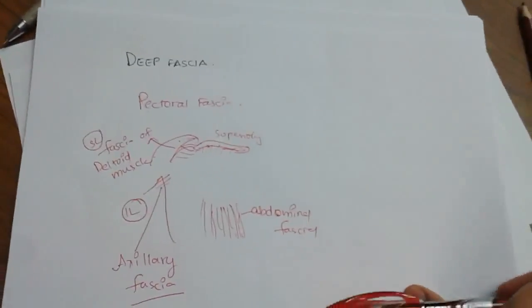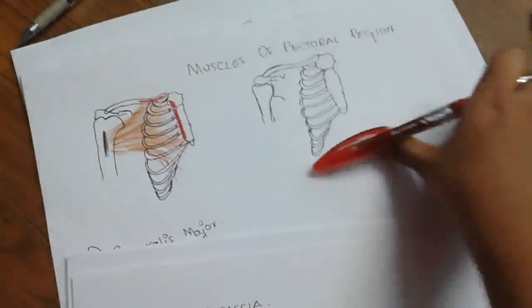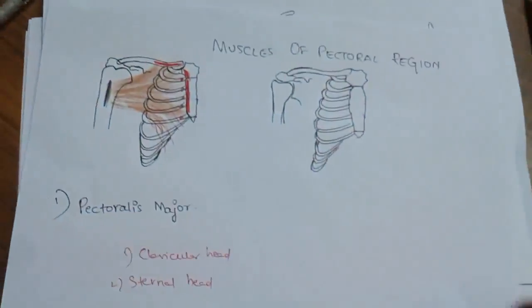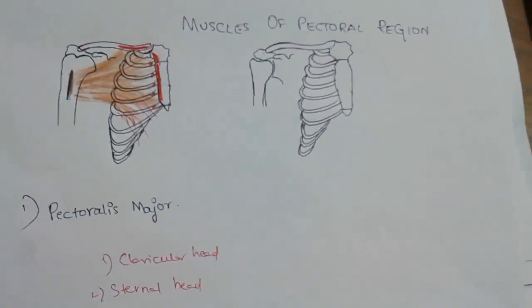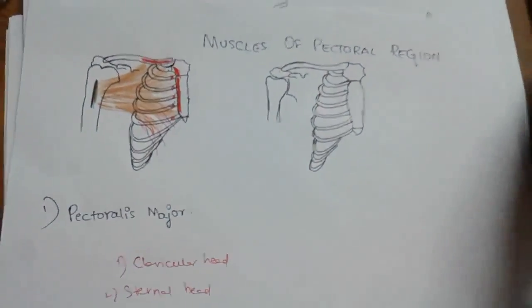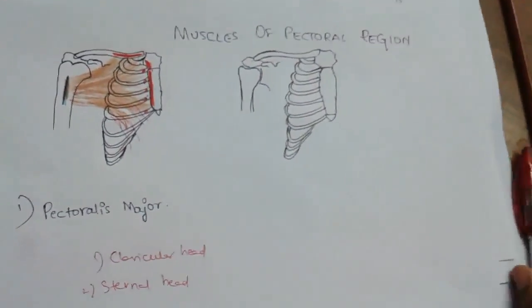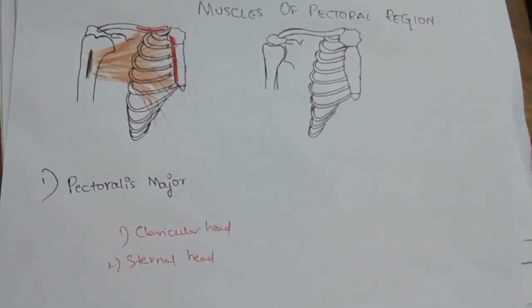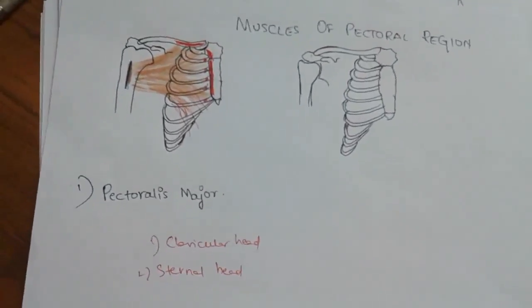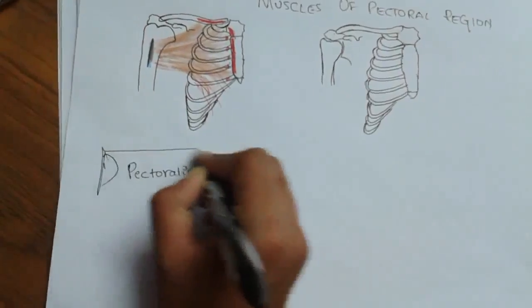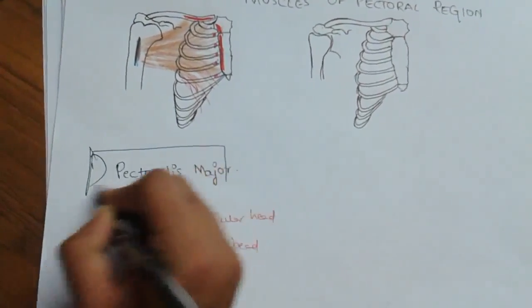Now after completing the fascia, we move on to the muscles of the pectoral region. There are four muscles which you will be dealing with here. The first muscle is pectoralis major.